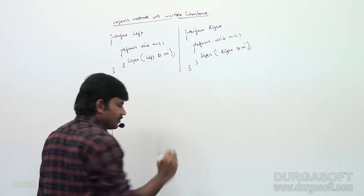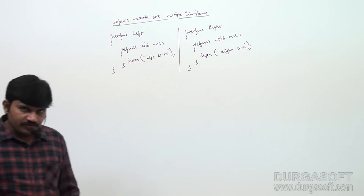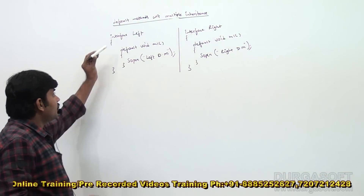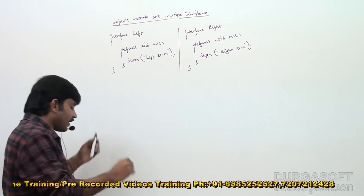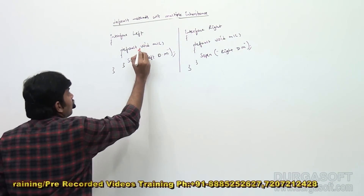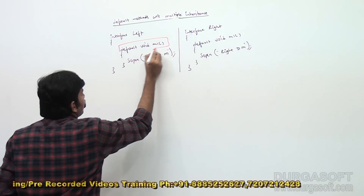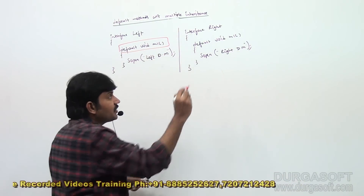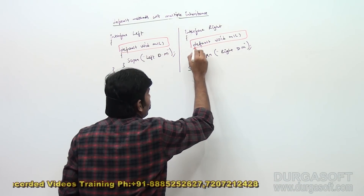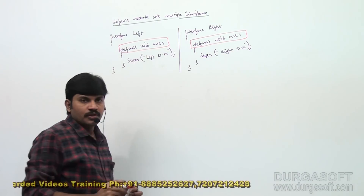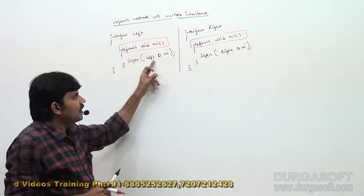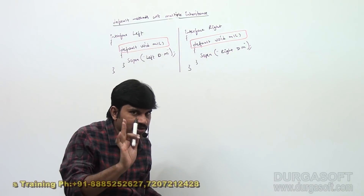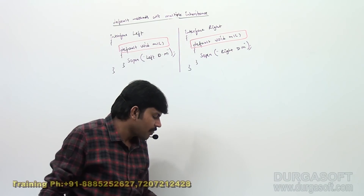So both interfaces — Left and Right — contain a default method with the same signature: `default void m1()`. Two interfaces contain a default method with the same signature. Take special care of this.